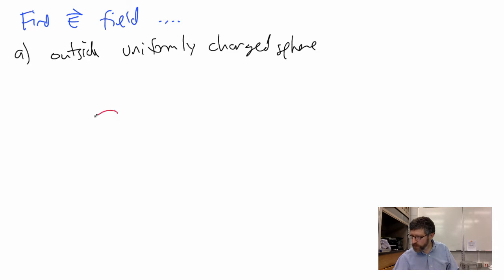Find the electric field outside a uniformly charged sphere. Here's a uniformly charged sphere. This is a sphere, and it's got charge Q. By uniformly charged, I mean the charges are completely even within the whole thing.